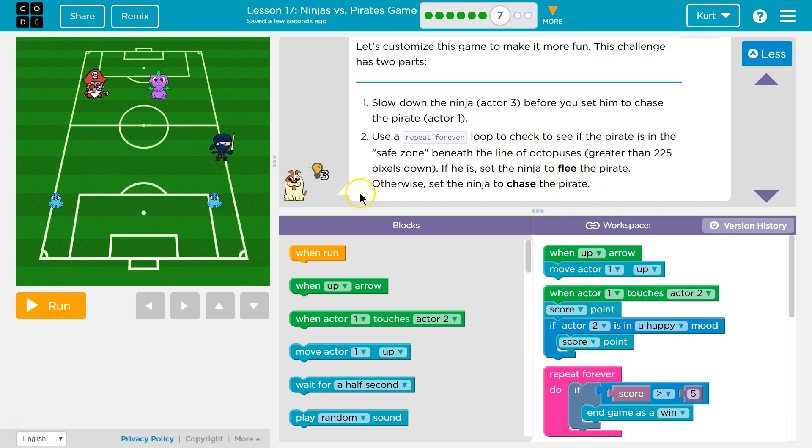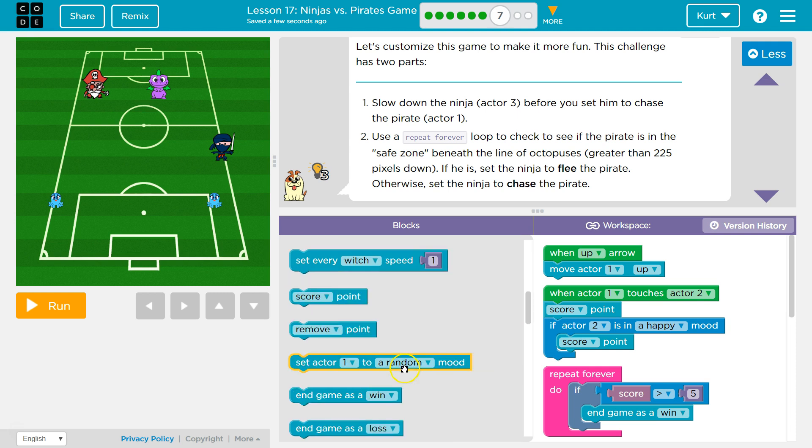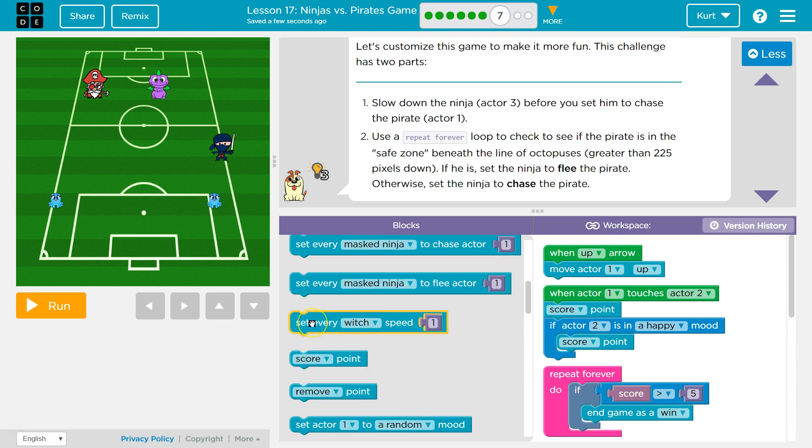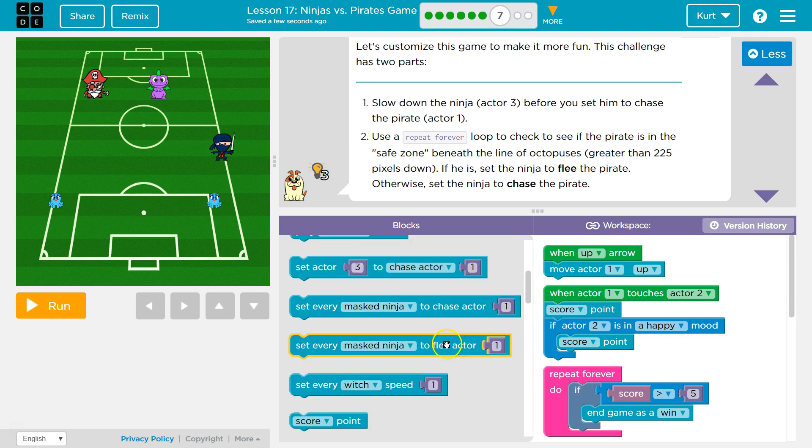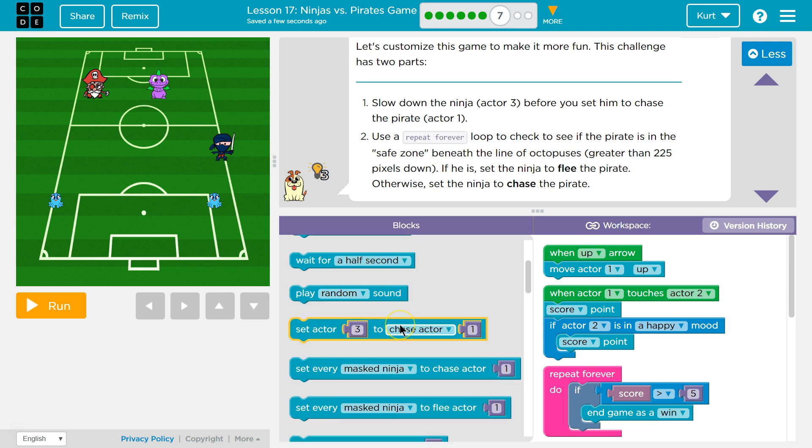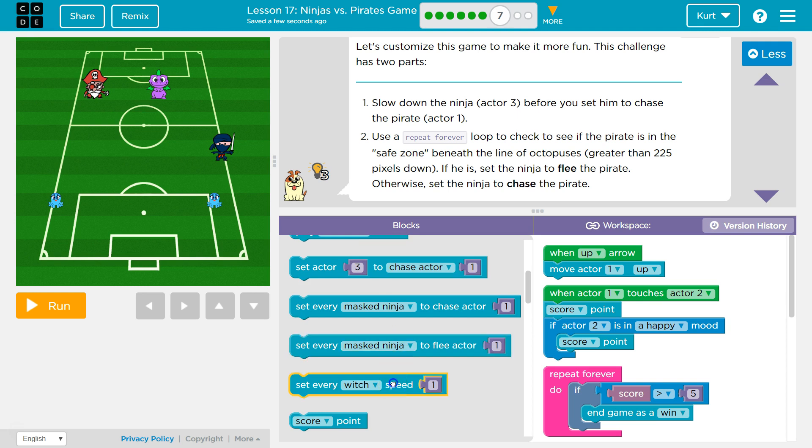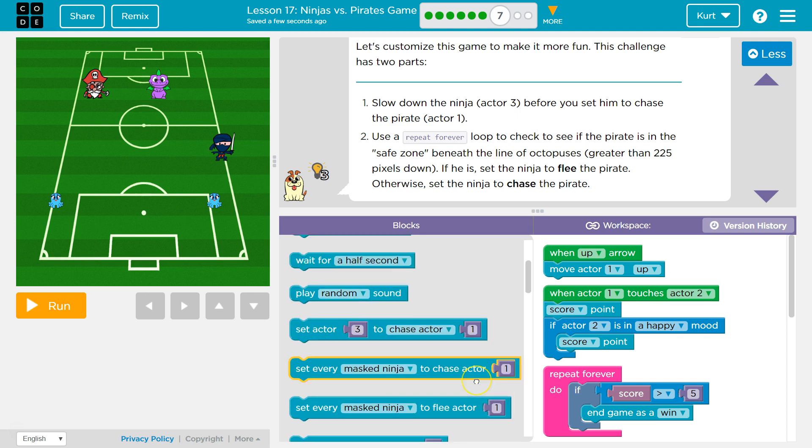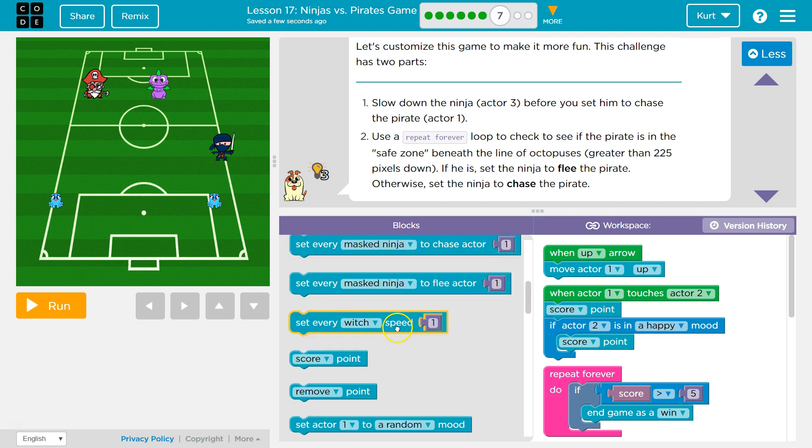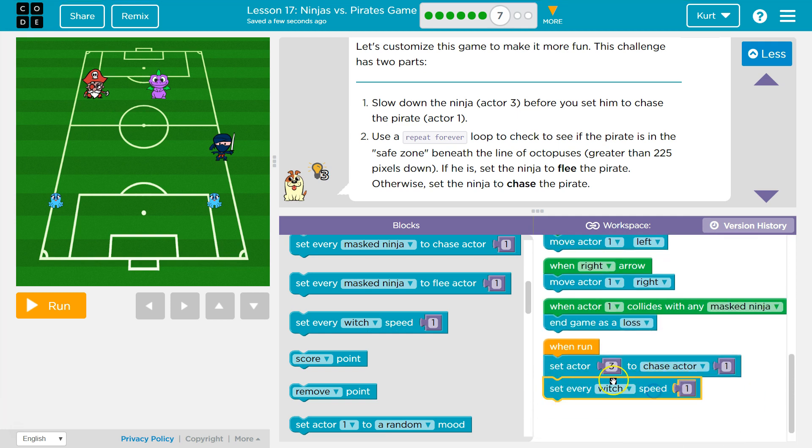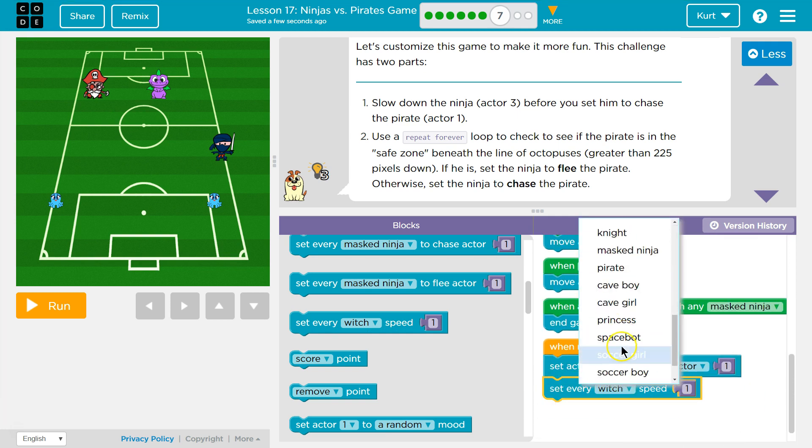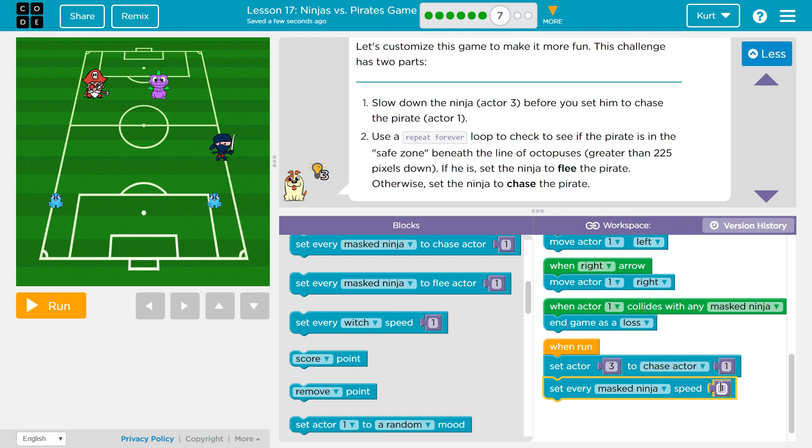So we got a few things. First, slow down the ninja. Let's slow down the ninja, so slow down actor 3. What could do that? Set actor 1 to no speed. Set every witch to speed. Set every mass ninja to flee. So we want to use this. Unless there's something else that controls speed. So set every witch? No, we want to set every mask ninja to a speed of 1, which I think is slower.